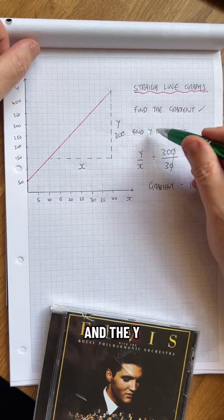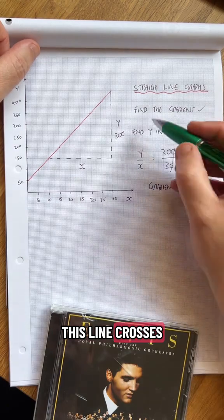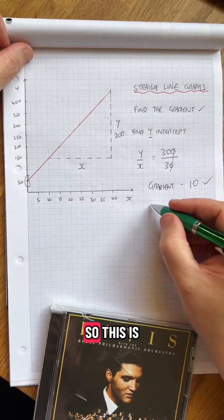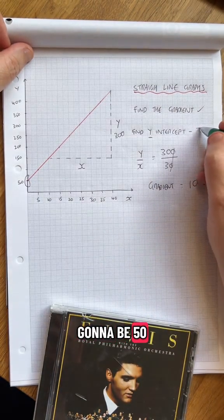And the y-intercept is where this line crosses the y-axis. It crosses right by there, so this is going to be 50.